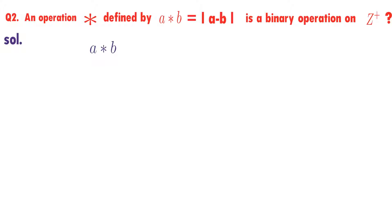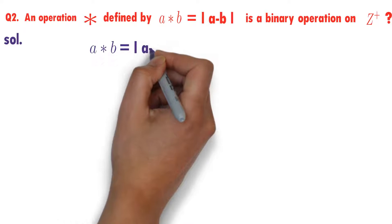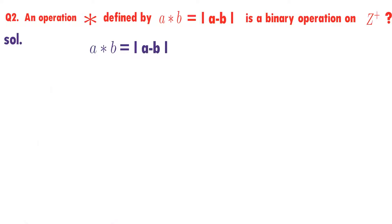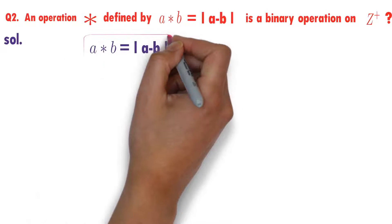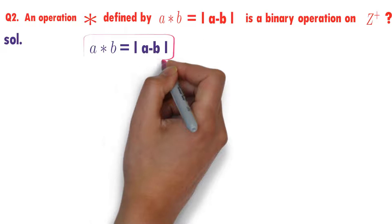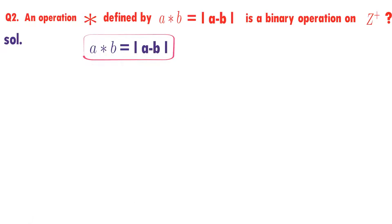How is the operation star defined? a star b is defined as modulus of a minus b. Now we need to check if star is a binary operation on Z plus or not.